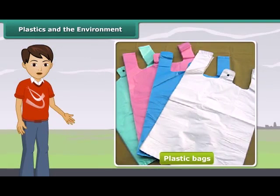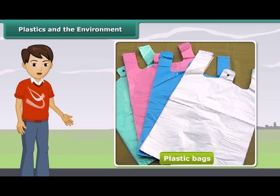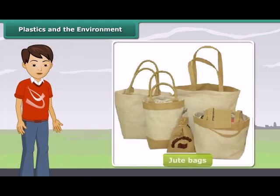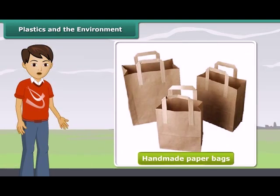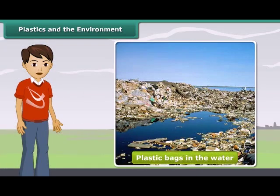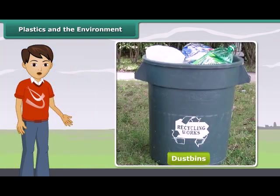There are a number of steps that we can take as environmentally conscious citizens to safeguard our environment from the growing menace of plastics. We can replace plastic shopping bags with jute bags or handmade paper bags. Instead of littering everywhere, particularly on roads, we should put plastic objects in dustbins marked as non-biodegradable, thus segregating them from biodegradable wastes.